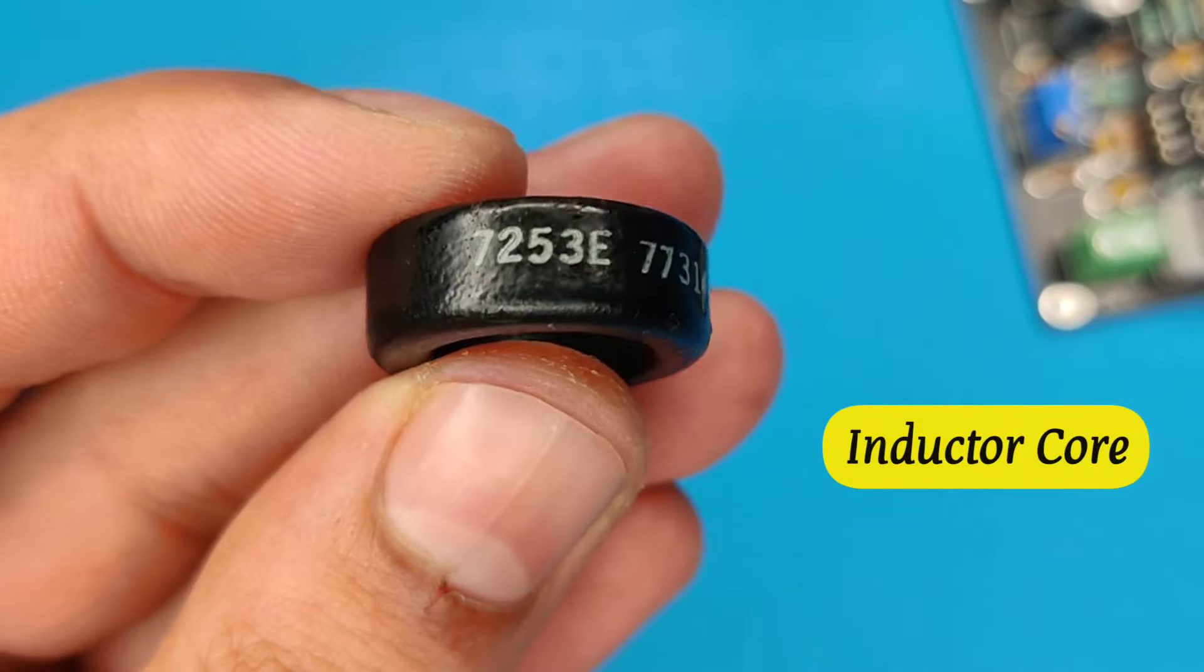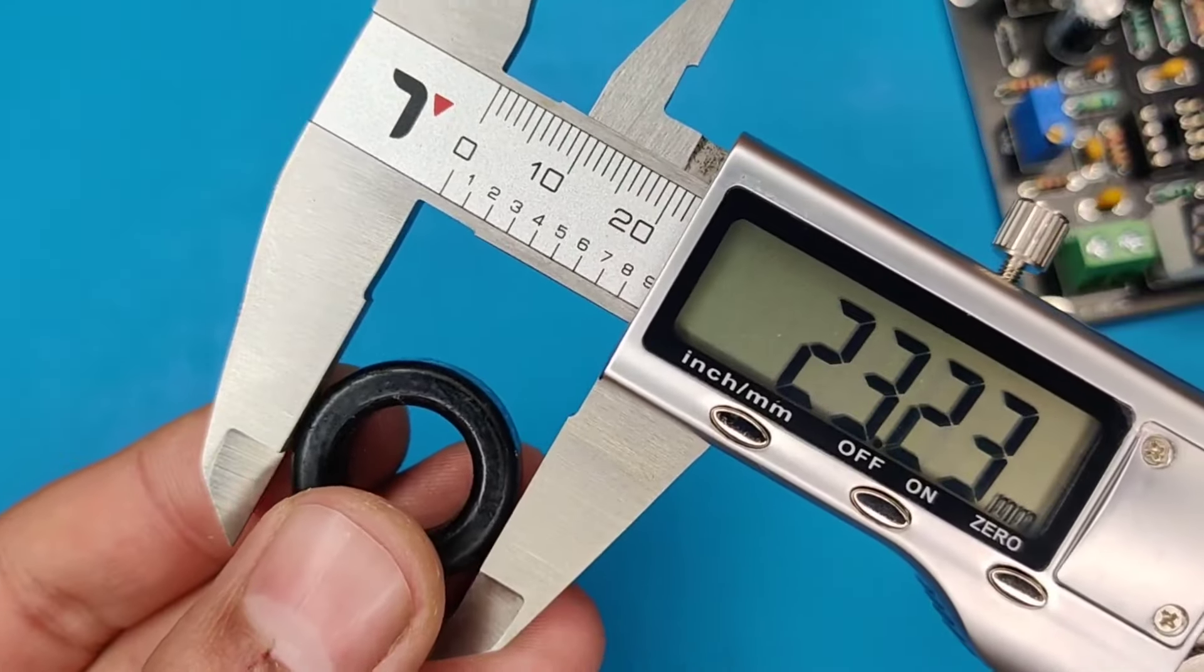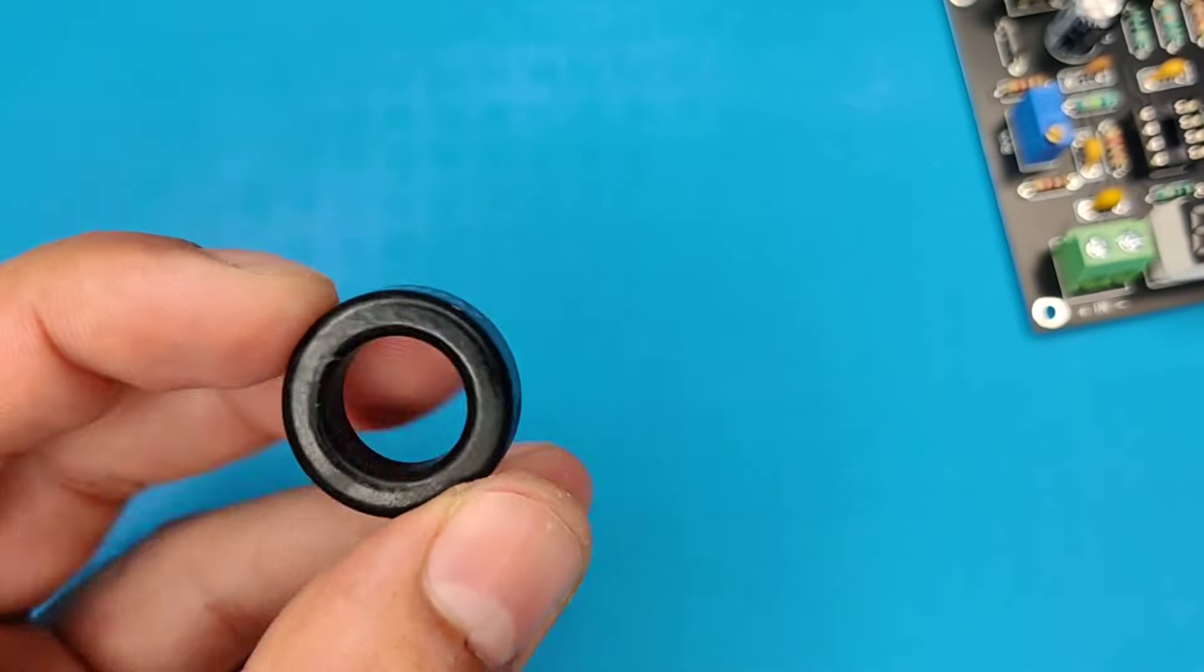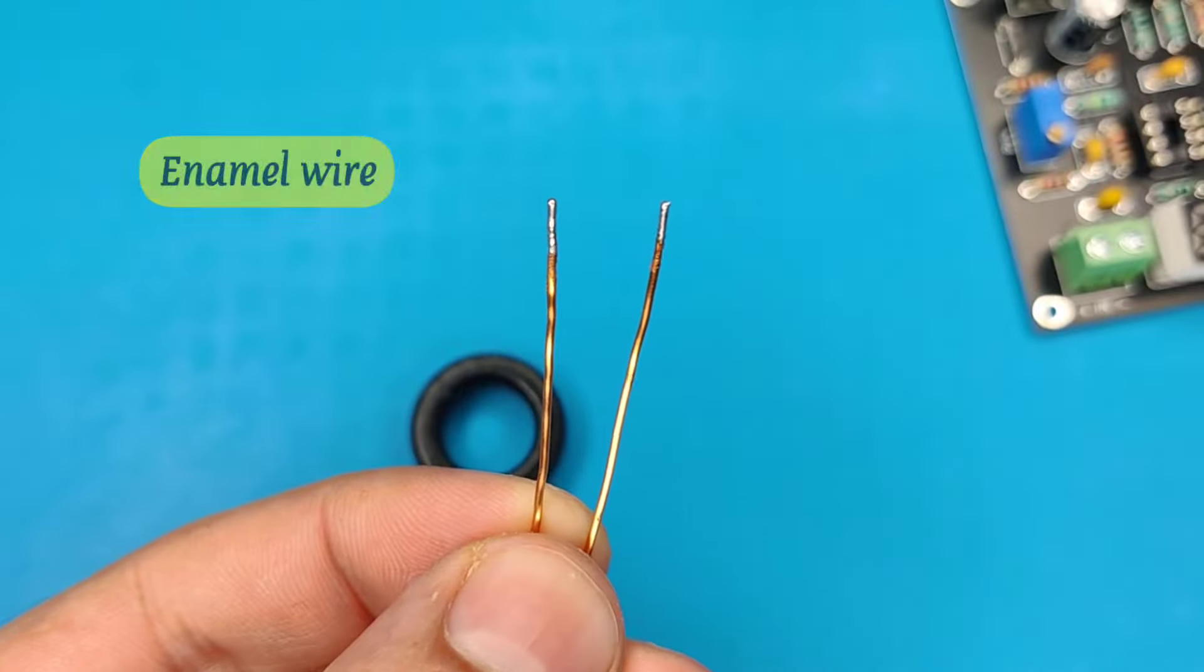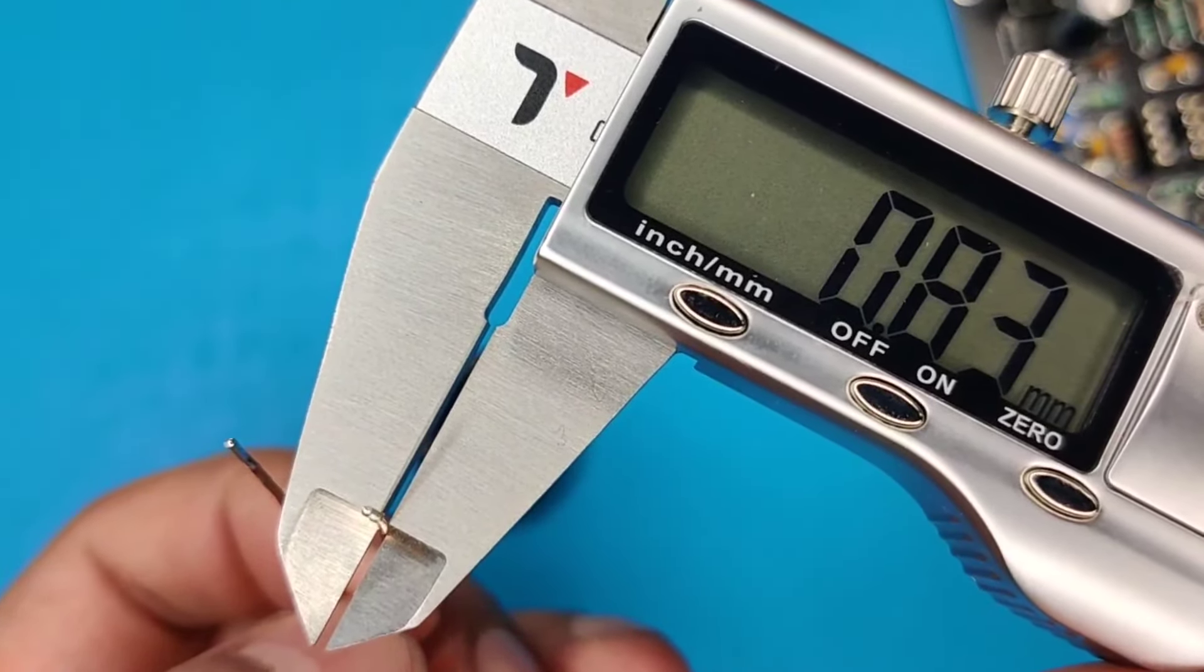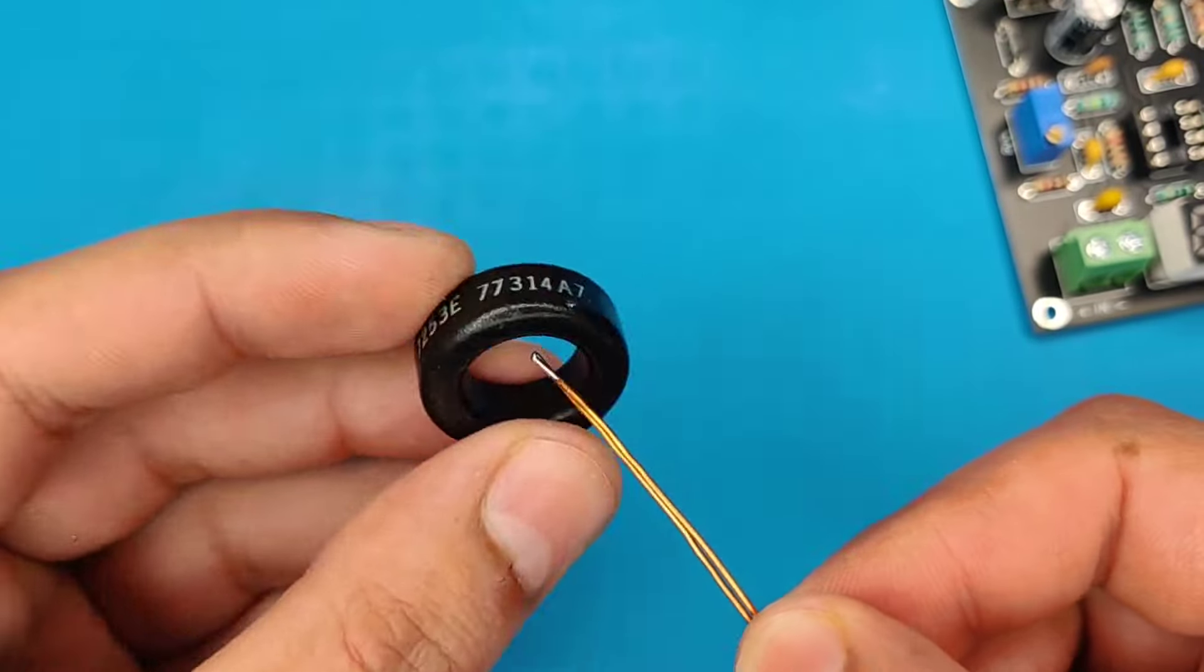Now use an inductor core, which in my case was 23mm outside and about 13.5mm inside. Also use two pieces of enamel copper wire, which is size of 0.8mm. Wind the 7 turns into this core.